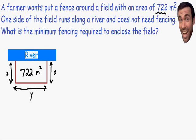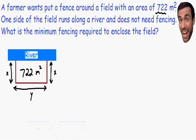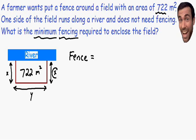Now let's look at the steps to solve any optimization problem. Step number one says to find the equation to maximize or minimize. Going back to our example, the question asks for the minimum fencing, so we need to minimize the length of the fence. The fence, shown in dark red, equals the perimeter of the rectangle. Adding all sides: we have two sides of length x, which is 2x, plus the third side y. So 2x plus y equals our perimeter — this is our equation to minimize.